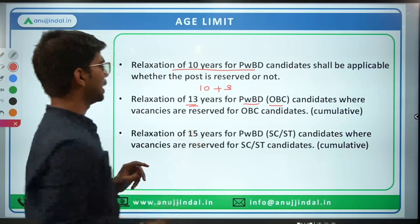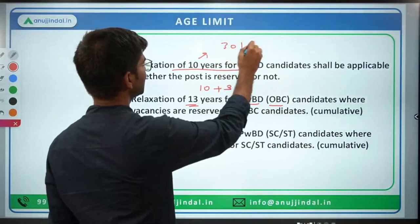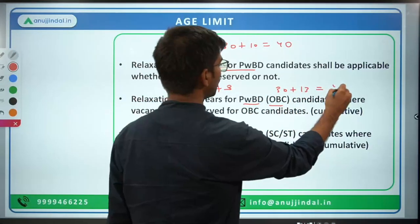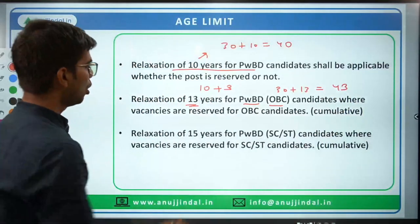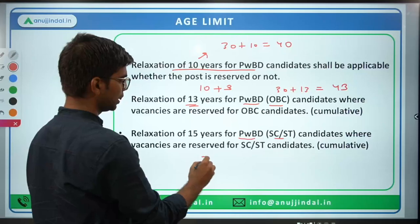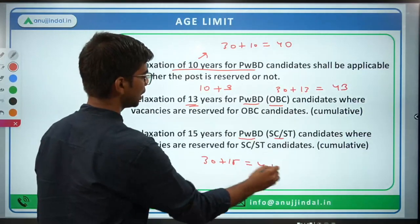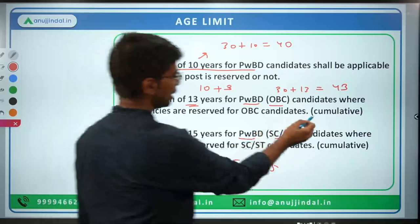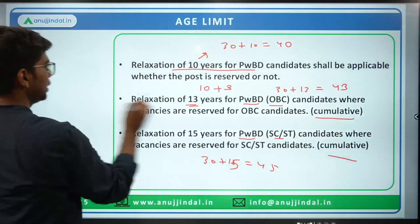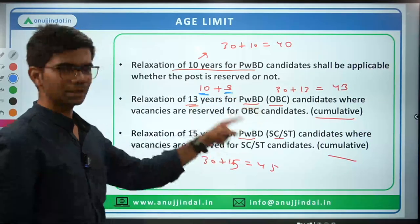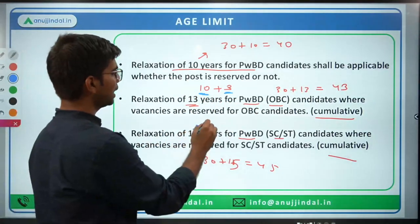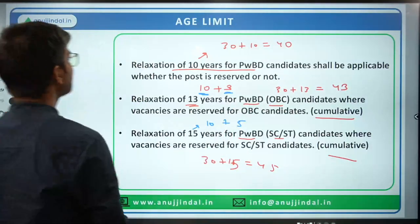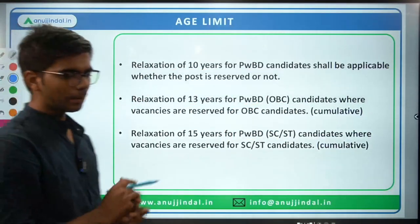If you belong to both PWBD and OBC categories, you get a cumulative benefit: 10 years for PWBD plus 3 years for OBC equals 13 years relaxation — so the maximum age limit becomes 30 + 13 = 43 years. If you are PWBD and SC/ST, you get 10 + 5 = 15 years relaxation, making the maximum age limit 45 years. This cumulative benefit applies accordingly.